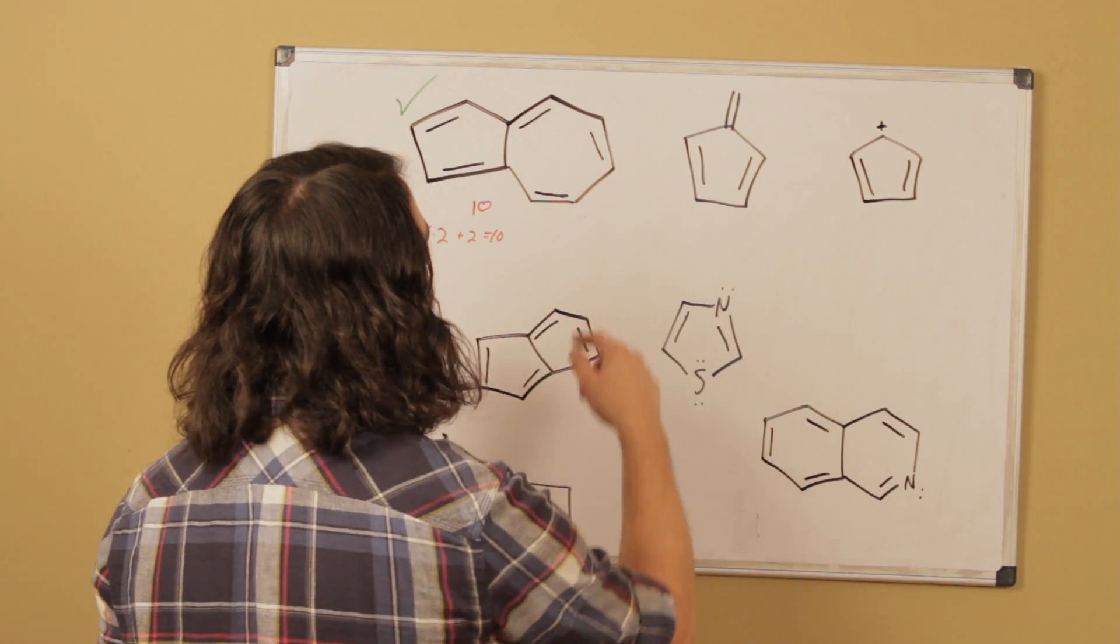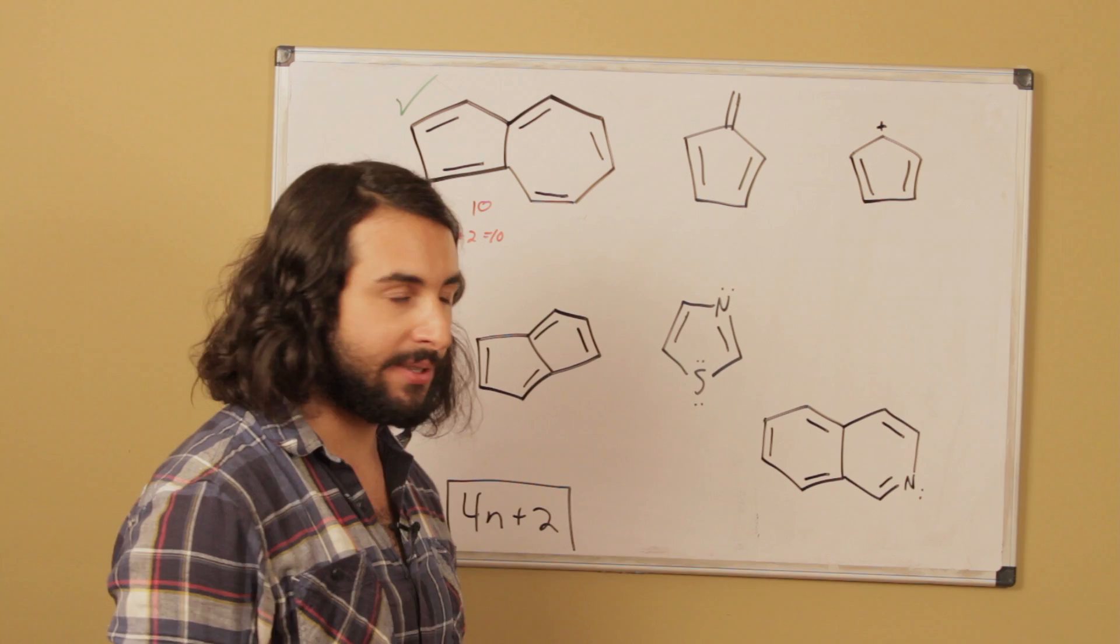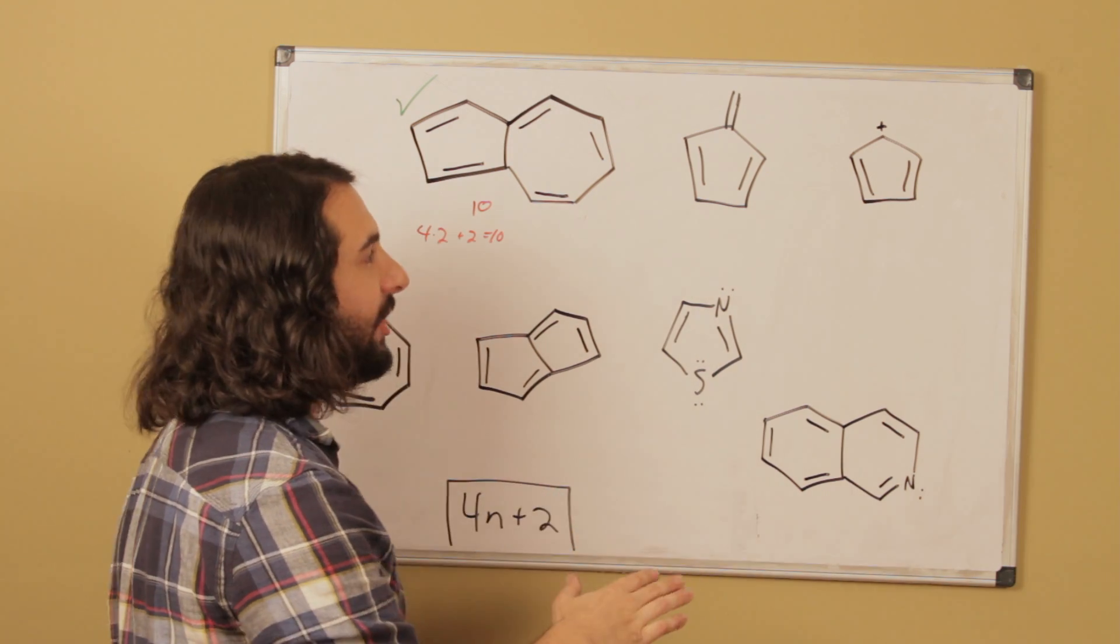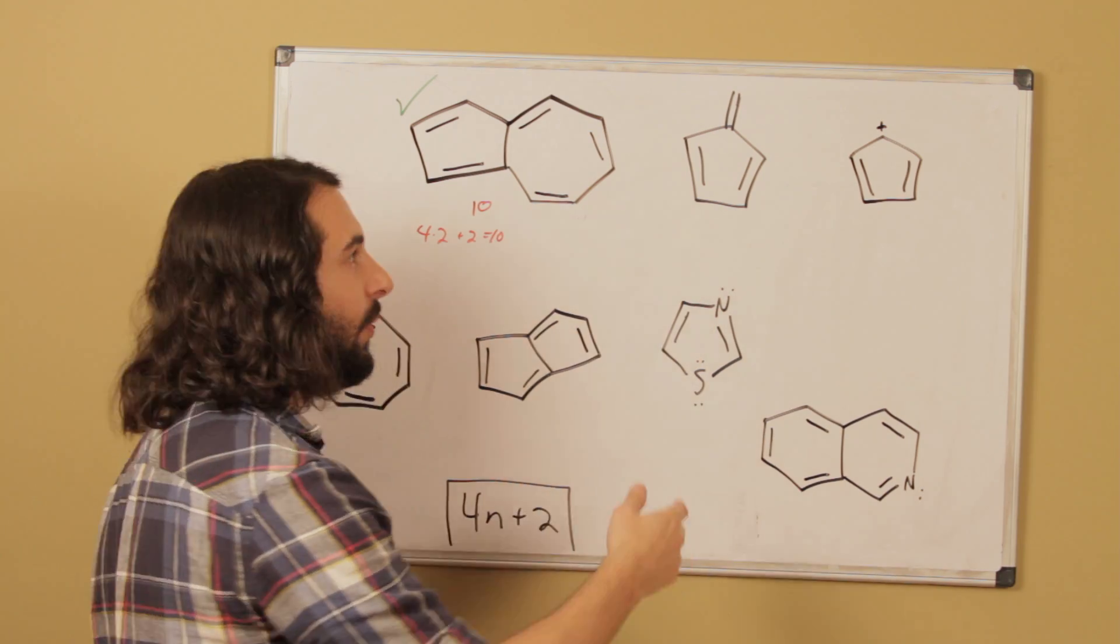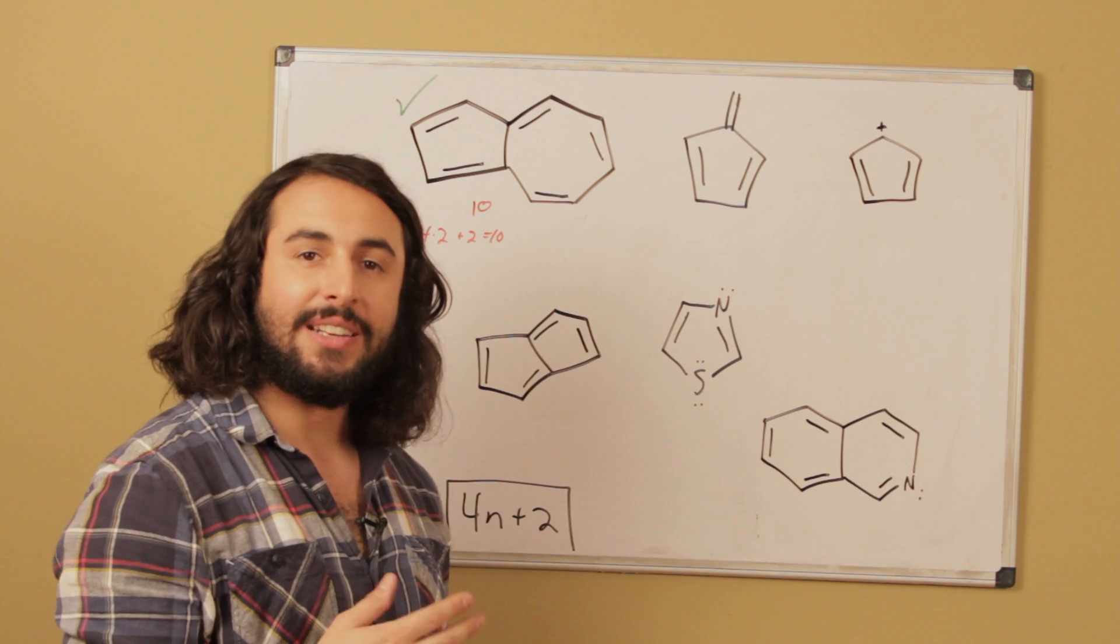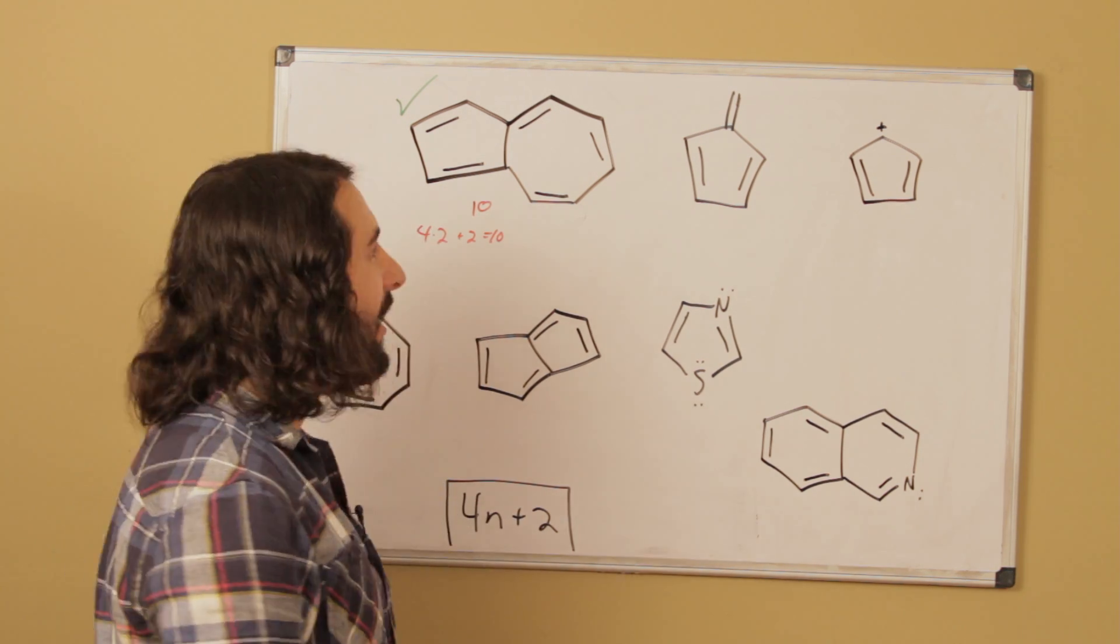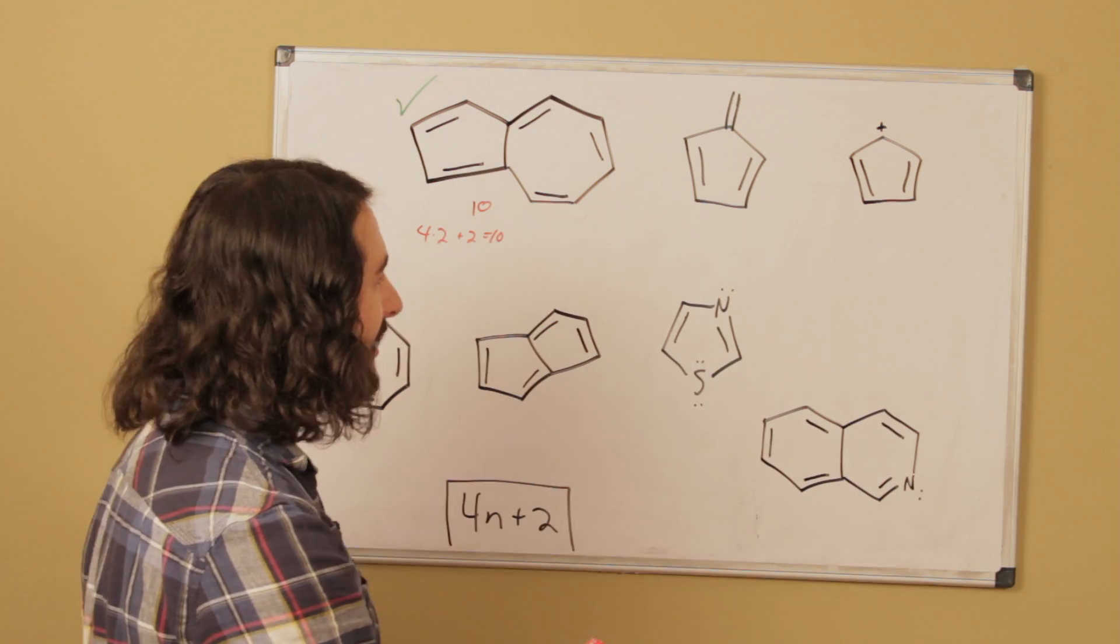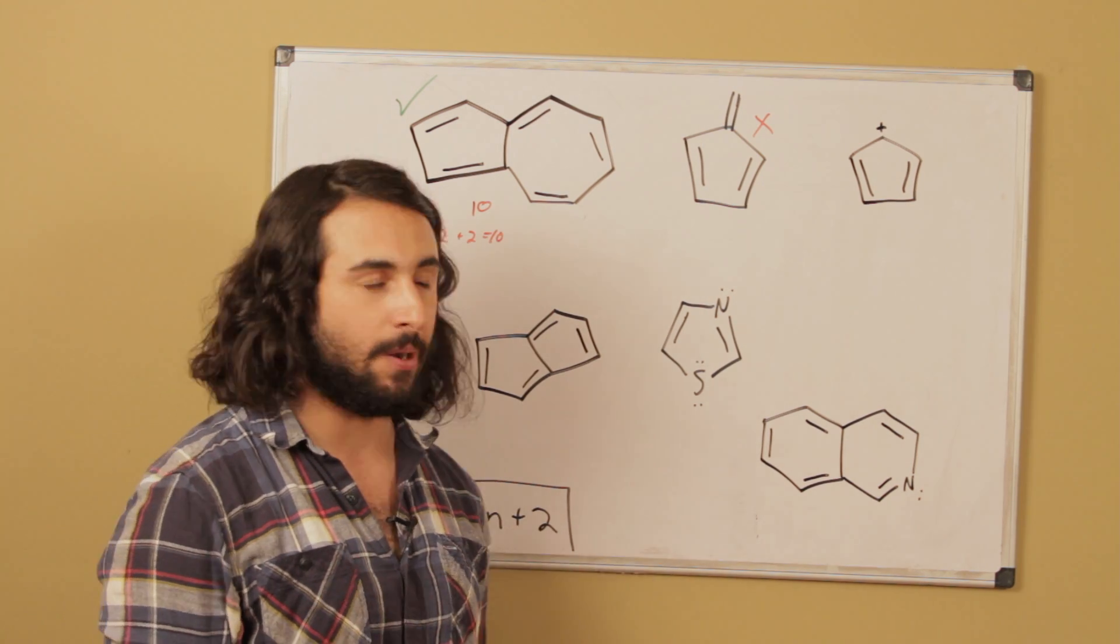So let's go to the next one here. Now this is fully planar. Those are all sp2 carbons. However, we are not fully conjugated inside the ring. Remember that the pi electrons all have to be inside the ring. So the fact that there are 2 pi electrons outside of the ring, it doesn't matter that 6 pi electrons does satisfy Huckel's rule because these are not all part of the ring system. So it is disqualified. We don't even have to look at Huckel's rule. It is not going to count as aromatic.